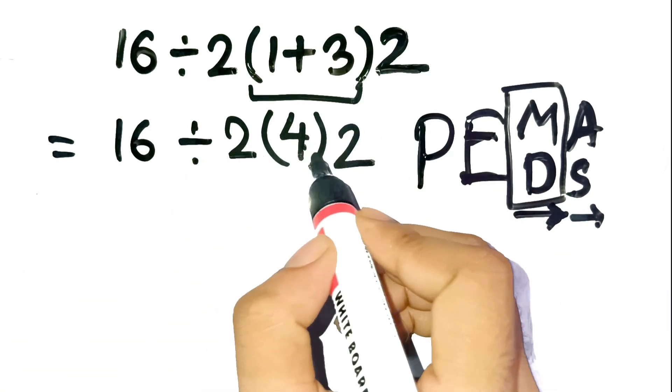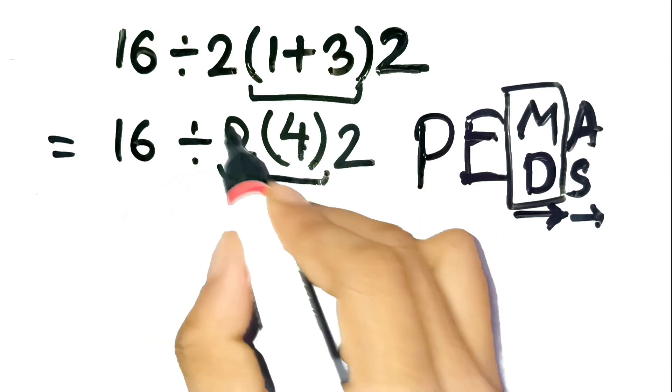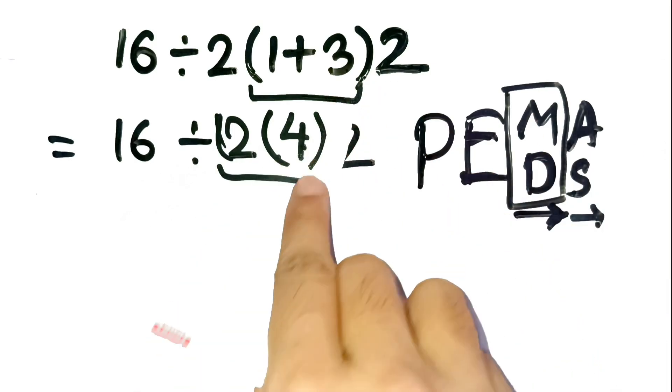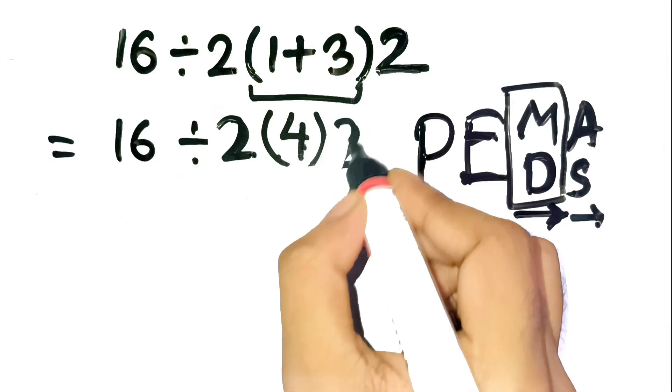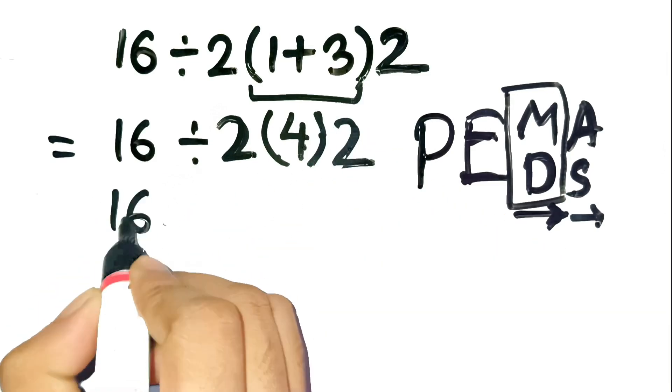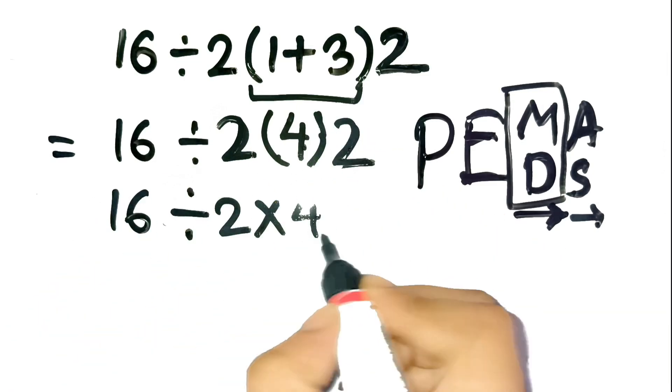The term 2, open parenthesis, 4, close parenthesis, doesn't mean it's inside the parenthesis. It just means 2 times 4. So now rewrite it clearly as 16 divided by 2 times 4 times 2.